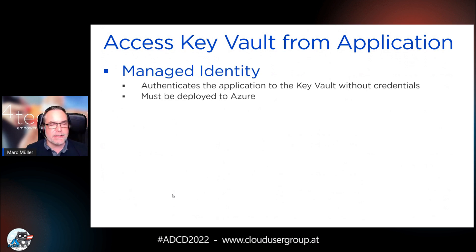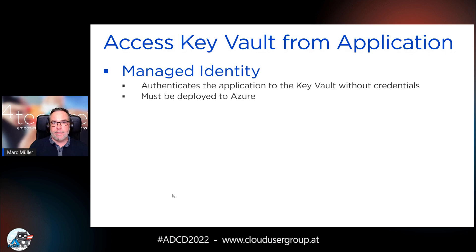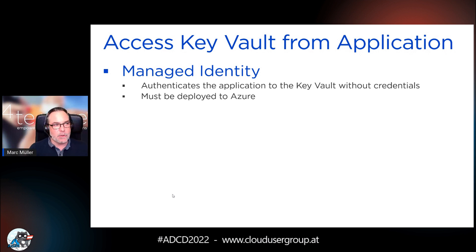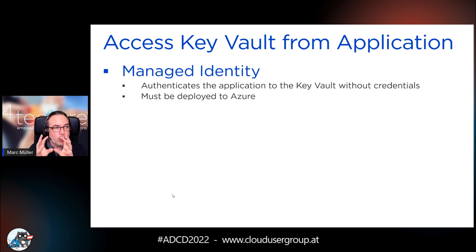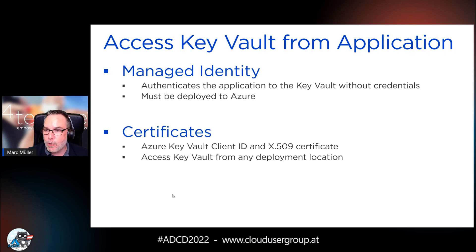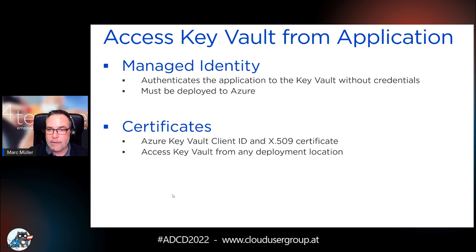If you have the possibility to directly read secrets from your application, you should do so rather than reading them in the agent, putting them into a configuration file, and rolling that out. The goal is to have secrets accessible directly from the application to Key Vault. For this we normally use managed identity — within Azure you can run any application as a managed identity and authenticate the application for Key Vault access without typing in any passwords. If this is not possible, certificates can be used for authentication. If you're inside Azure, the managed identity approach is the one to go.